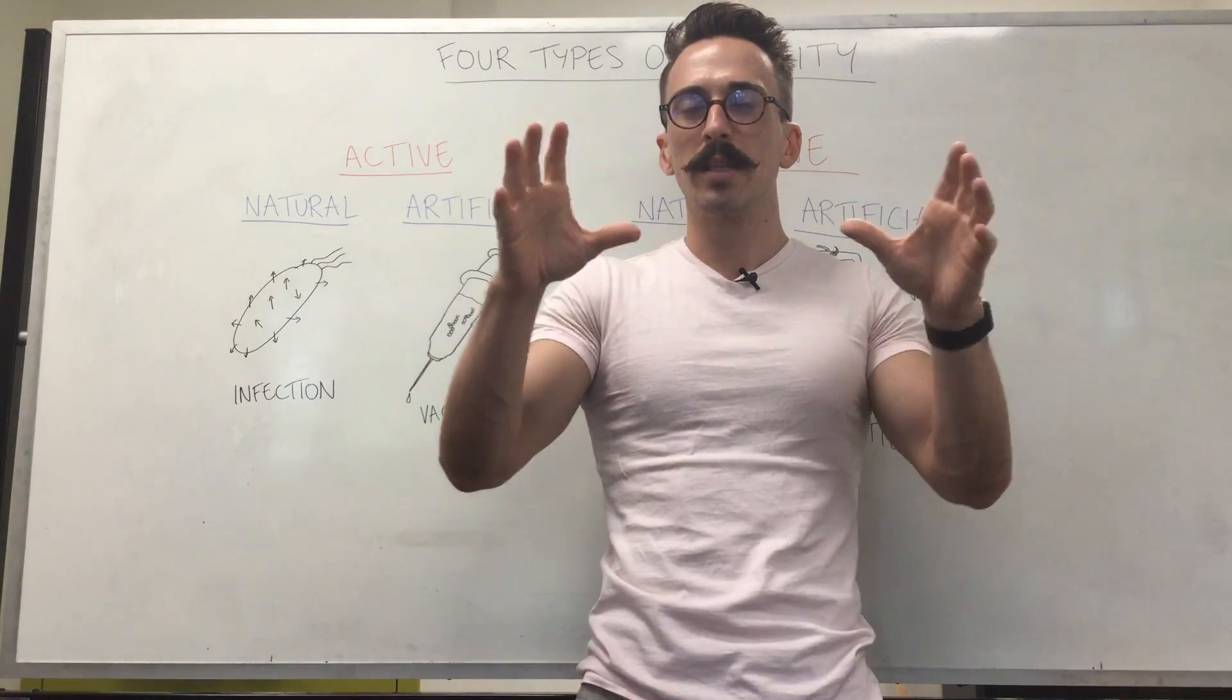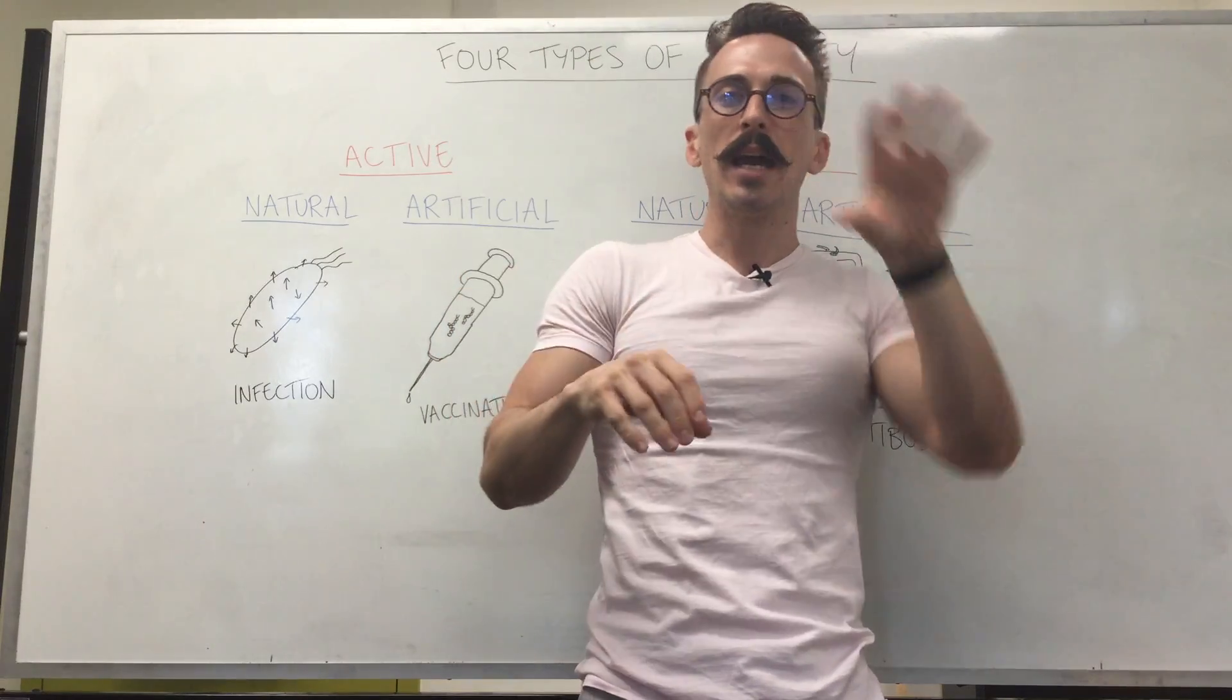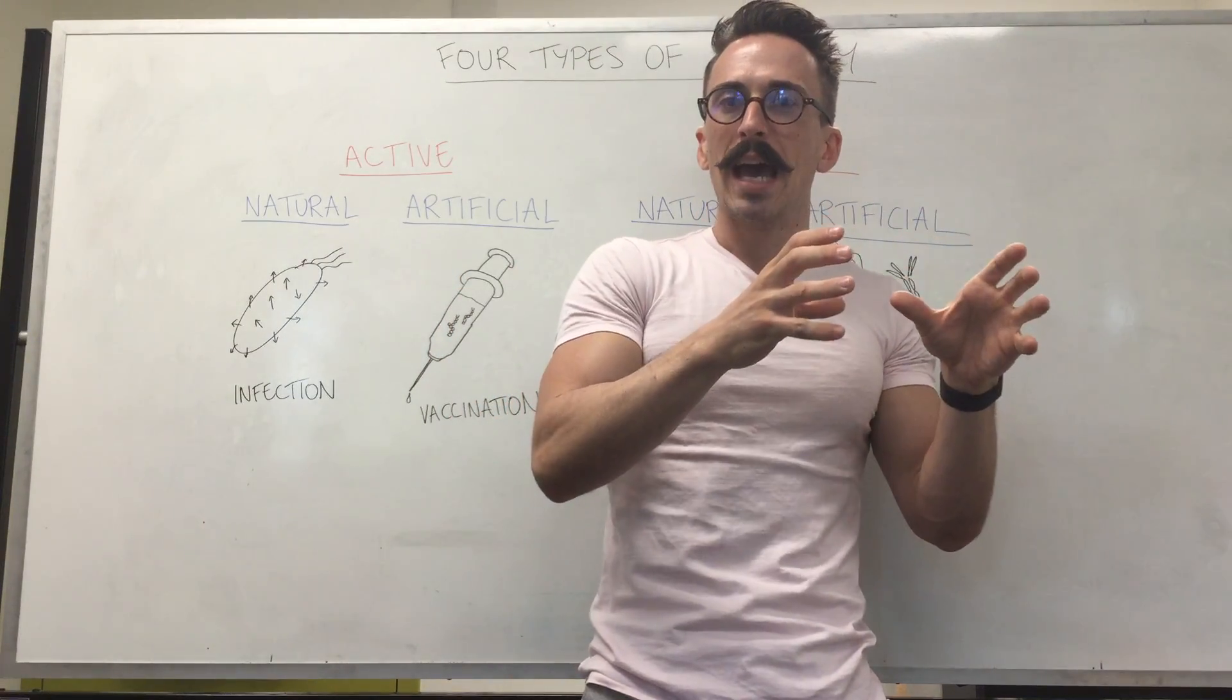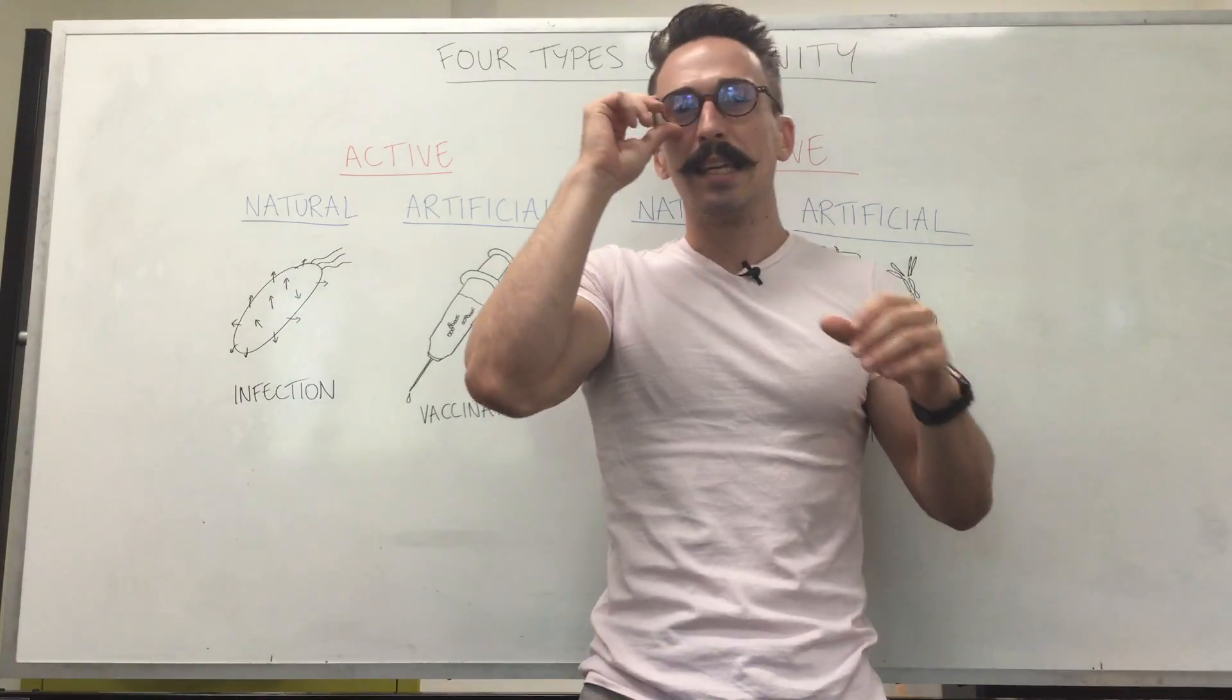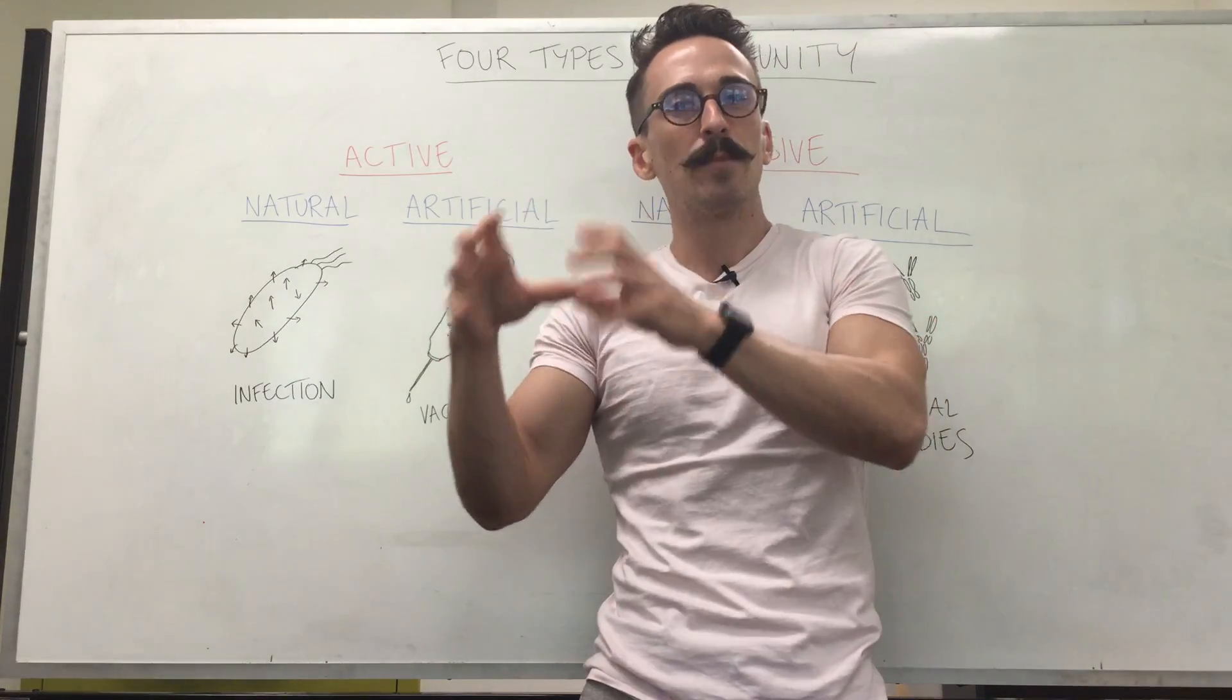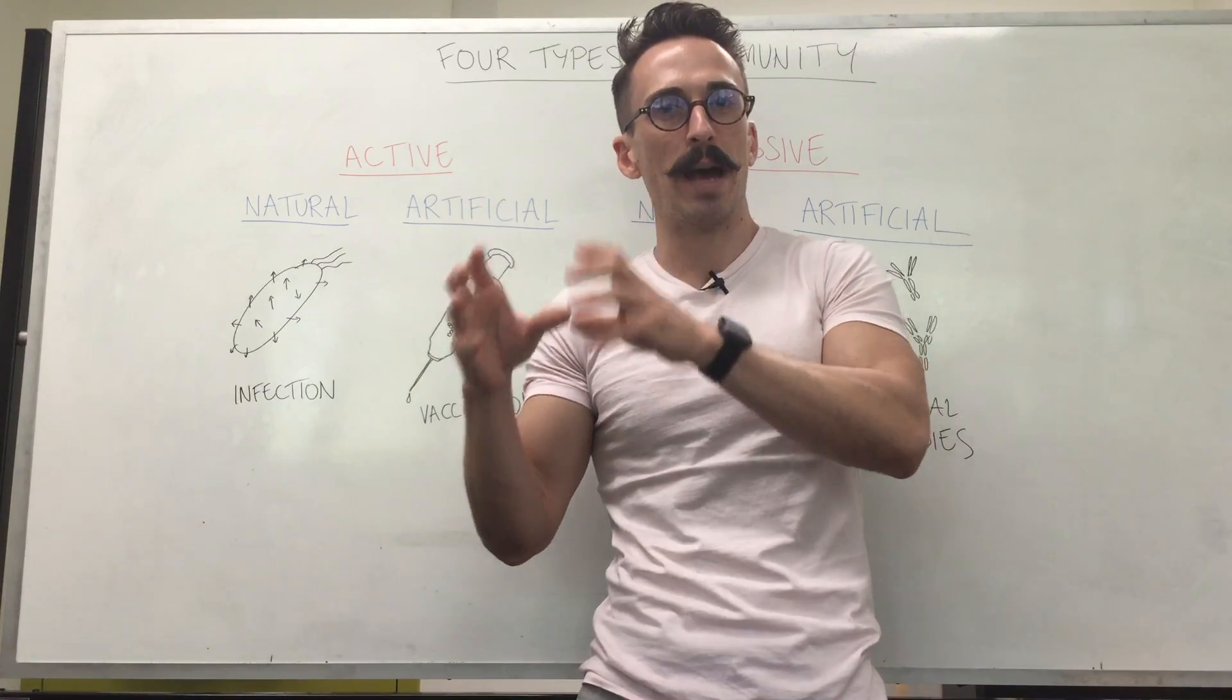Remember that the immune system can be broken up into the innate immune system and the adaptive. The innate immune system is non-specific and you don't create any immunological memory to pathogens. The adaptive immune system is specific and you do create immunological memory to specific pathogens.